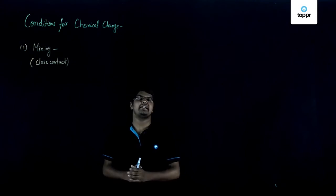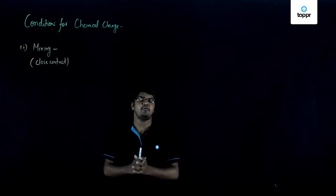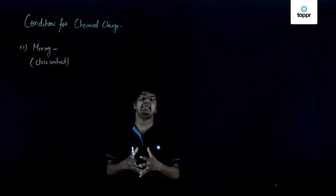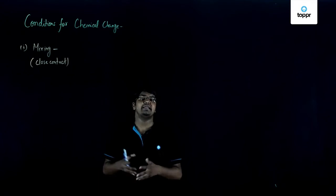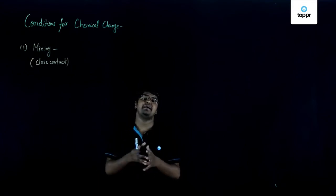Let us now discuss the conditions that are required for a chemical change. For a chemical change, it is necessary that the particles collide or be in proximity with each other. This can be done either by bringing them in close contact or by supplying them energy.